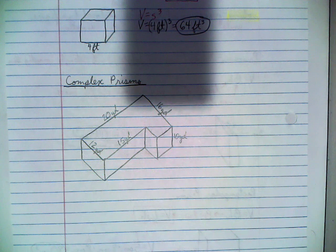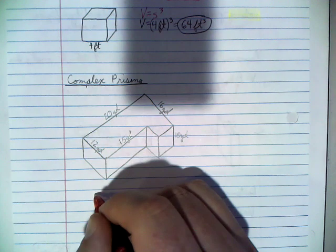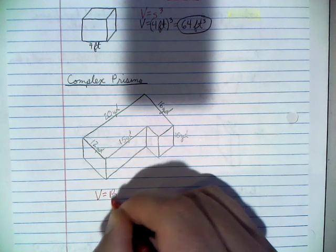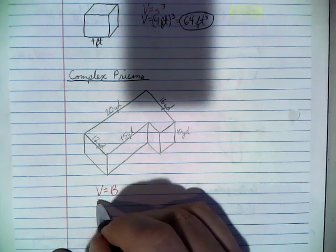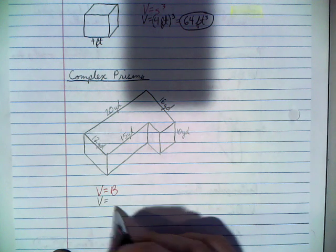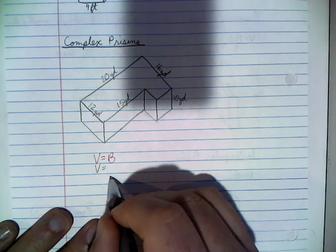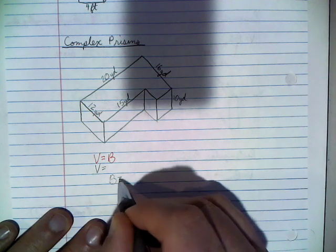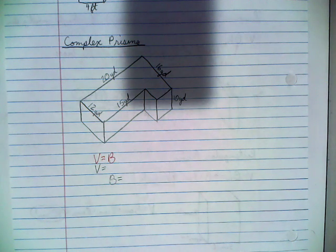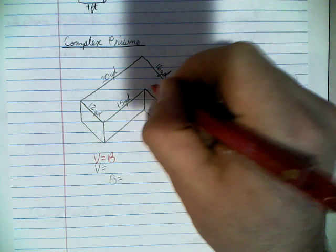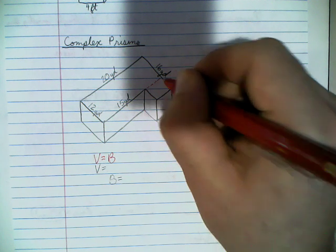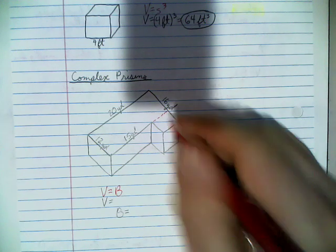To find the volume of a complex prism, it's still a prism, so we still use V equals B times h. We start with V equals B, meaning we need the area of the base. Since this is a complex shape, I break it into two different sections by drawing a line to create two rectangles.